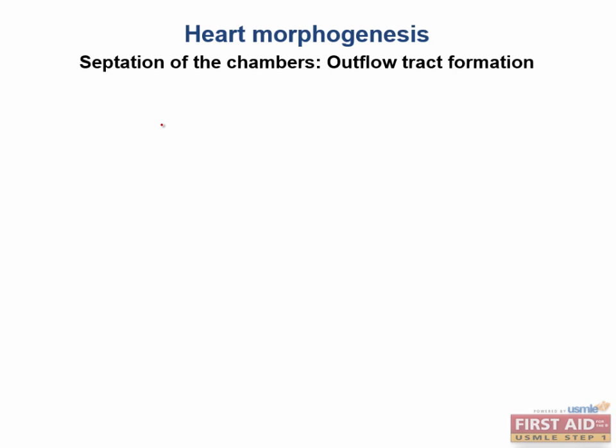Now let's talk about septation of the chambers and the formation of the outflow tract. As the interventricular septum grows, it will eventually fuse with the aorticopulmonary septum. So the IV septum will fuse with the aorticopulmonary septum.